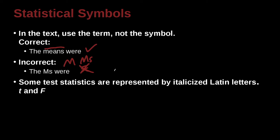Some statistics are represented by italicized Latin letters, so you need to pay attention to that. In the APA manual, they have a guideline for all of those. So the T for the T test, the F for the F test, rather than the straight letters. You use the italicized letters, which is the angled letters like that. That is correct.